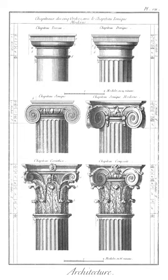Roof comb: the structure that tops a pyramid in monumental Mesoamerican architecture; also common as a decorative embellishment on the ridge of metal roofs of some domestic Gothic-style architecture in America in the 19th century.